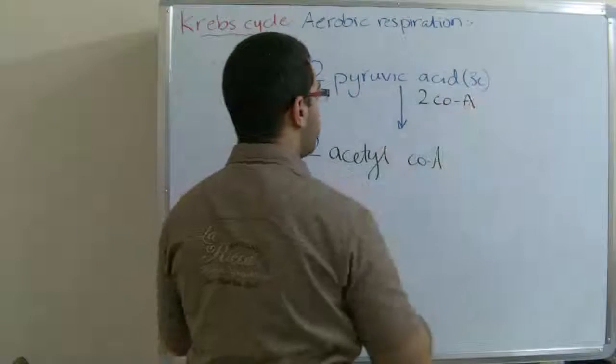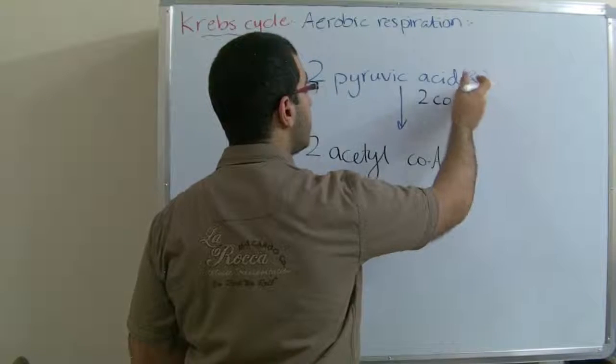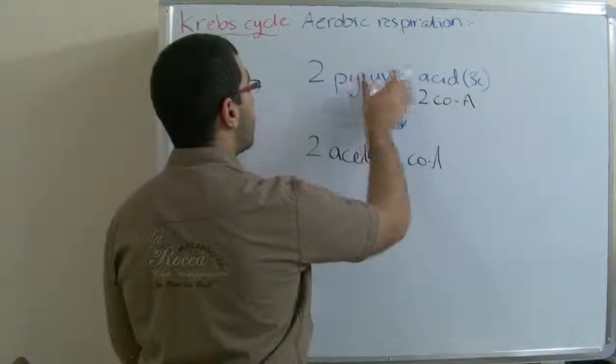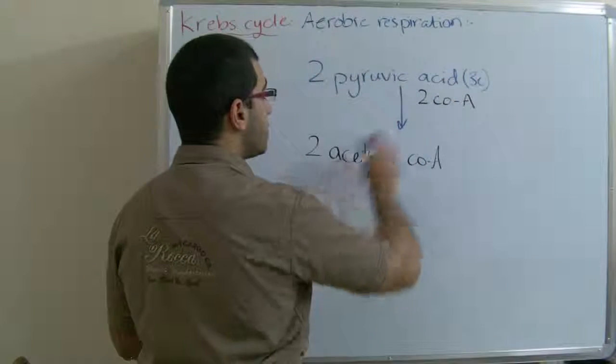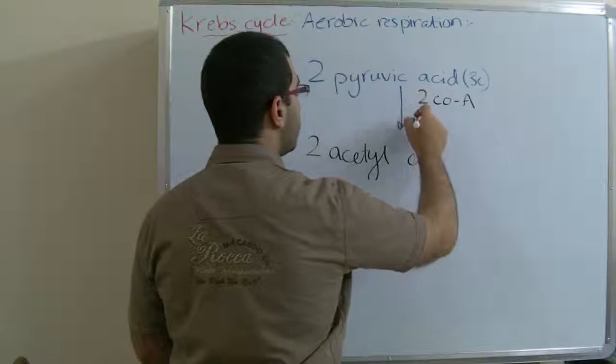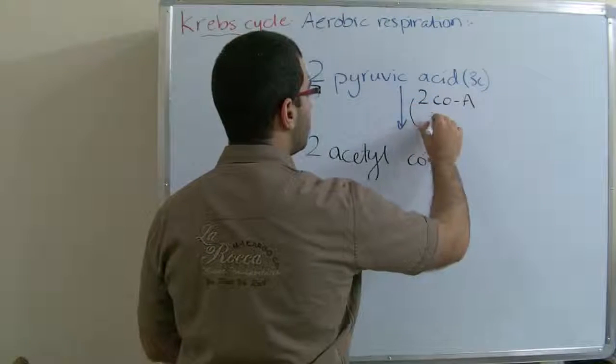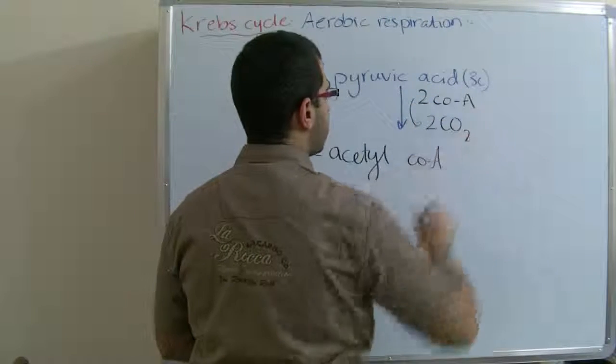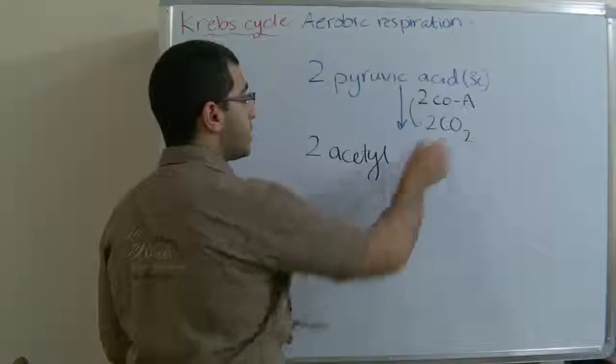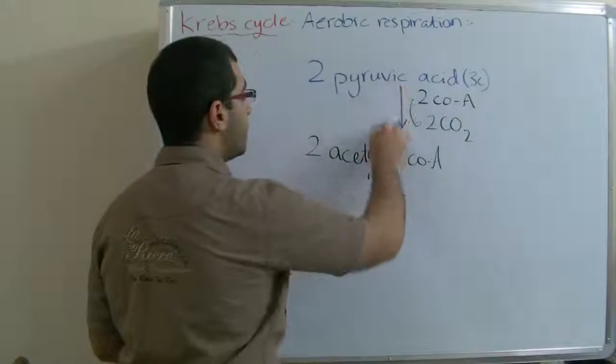The two CoA each use a carbon atom from the pyruvic acid, so they transform into two carbon dioxide molecules. We have here two carbon dioxide molecules produced during this transformation.